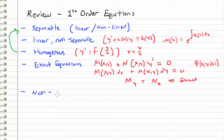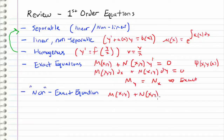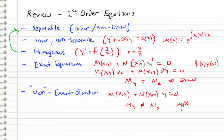For non-exact equations, we can still consider equations of the form M(x,y) plus N(x,y) times y prime equals zero, but where M sub y does not equal N sub x. If M differentiated with respect to y does not equal N differentiated with respect to x, then this is not an exact equation. However, we can use two different integrating factors — mu of x or mu of y — in order to turn this non-exact equation into an exact equation and then proceed with solving it normally.